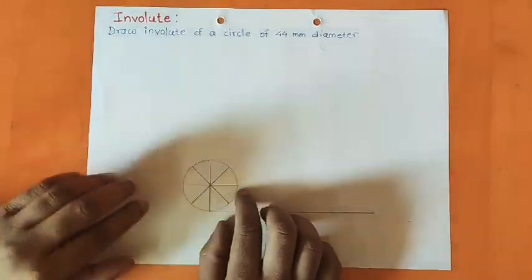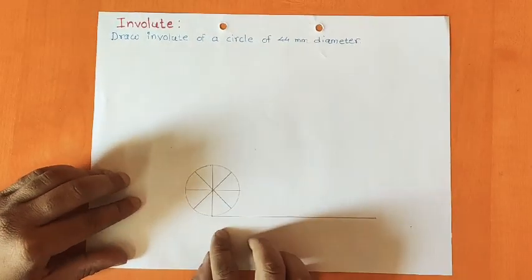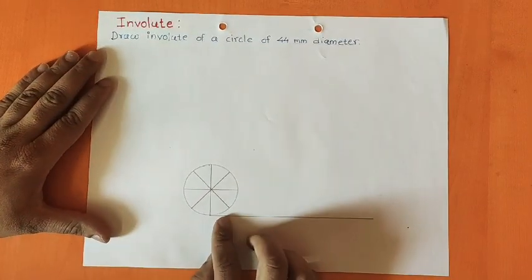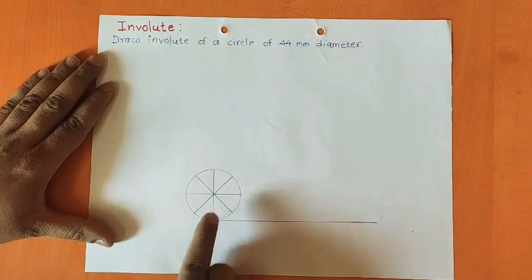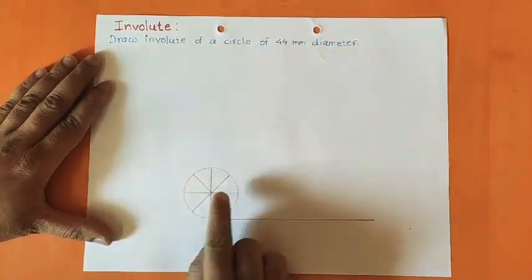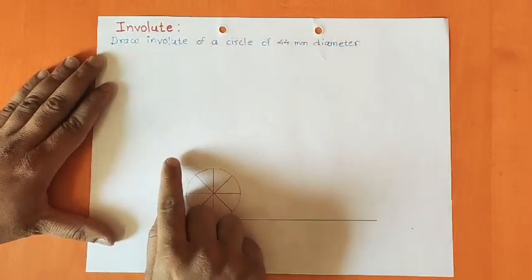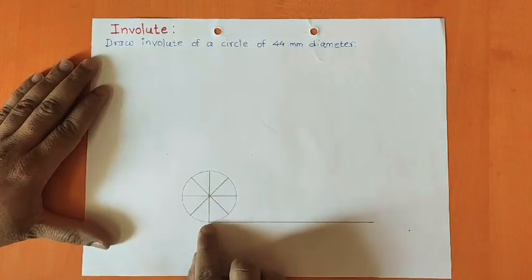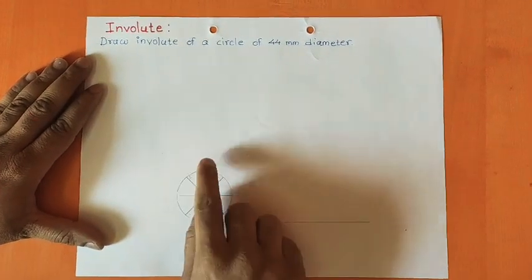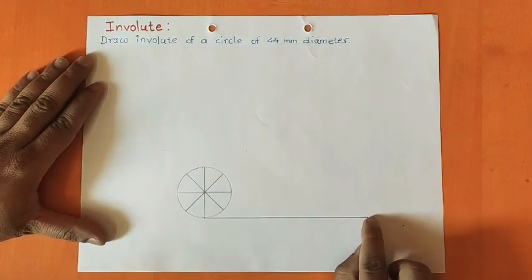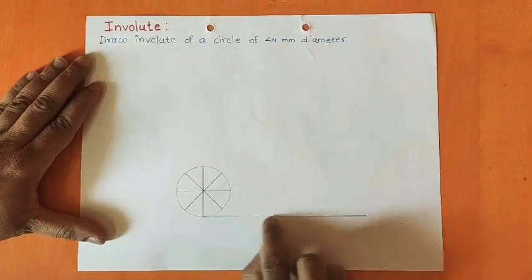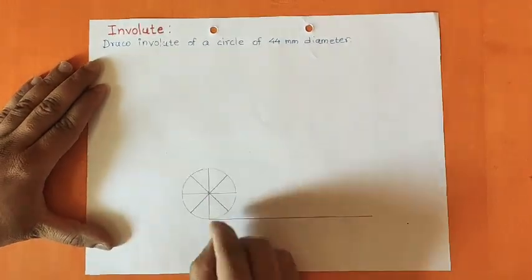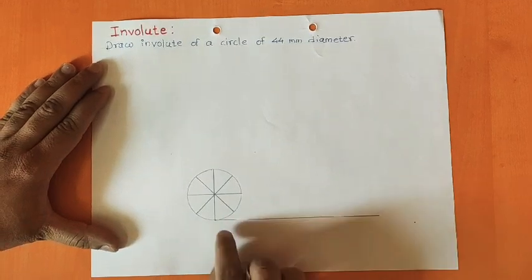I have already drawn this circle with 44mm diameter. Once you draw this circle, divide it into 8 equal parts — that is 45 degrees each. Then at the bottom of the circle draw a tangent, which means a line perpendicular to the vertical line at that point.